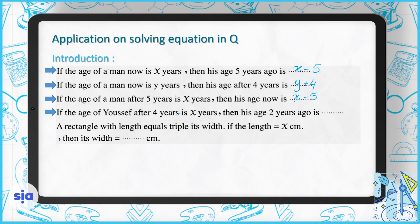The fourth one: if the age of Yusuf after four years is X, what is his age two years ago? Think of this logically. After four years he's X, so coming back to now, X becomes X minus four. But the question wants his age two years ago, so it will be X minus four minus two, which is X minus six.